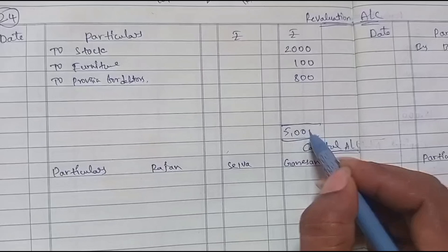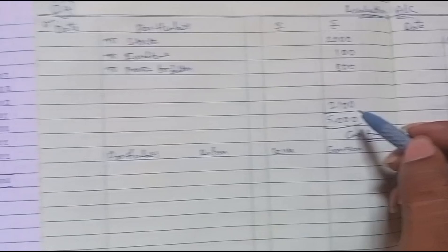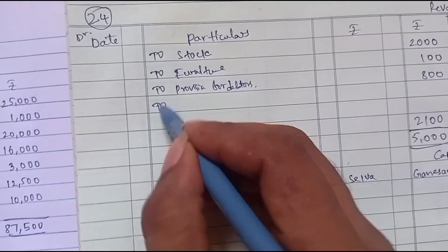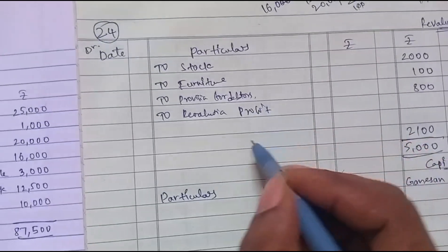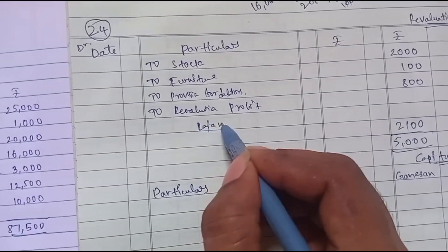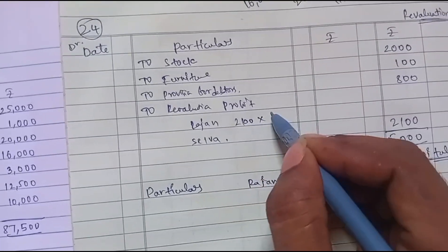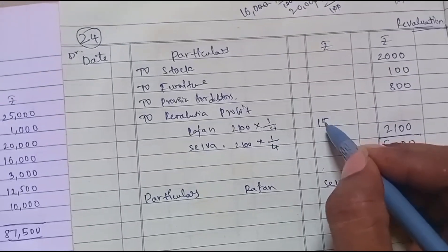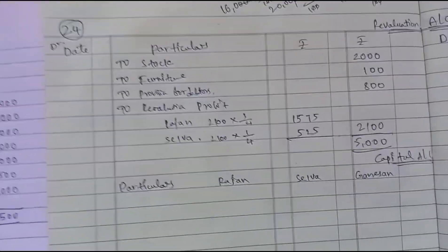The total credit side is 5,000 and total debit side is 2,900, so the revaluation profit is 5,000 minus 2,900 equals 2,100. This 2,100 is distributed between Rajan and Selva in their 3:1 ratio. Rajan gets 2,100 into 3 by 4, which is 1,575. Selva gets 2,100 into 1 by 4, which is 525. This completes the revaluation account.